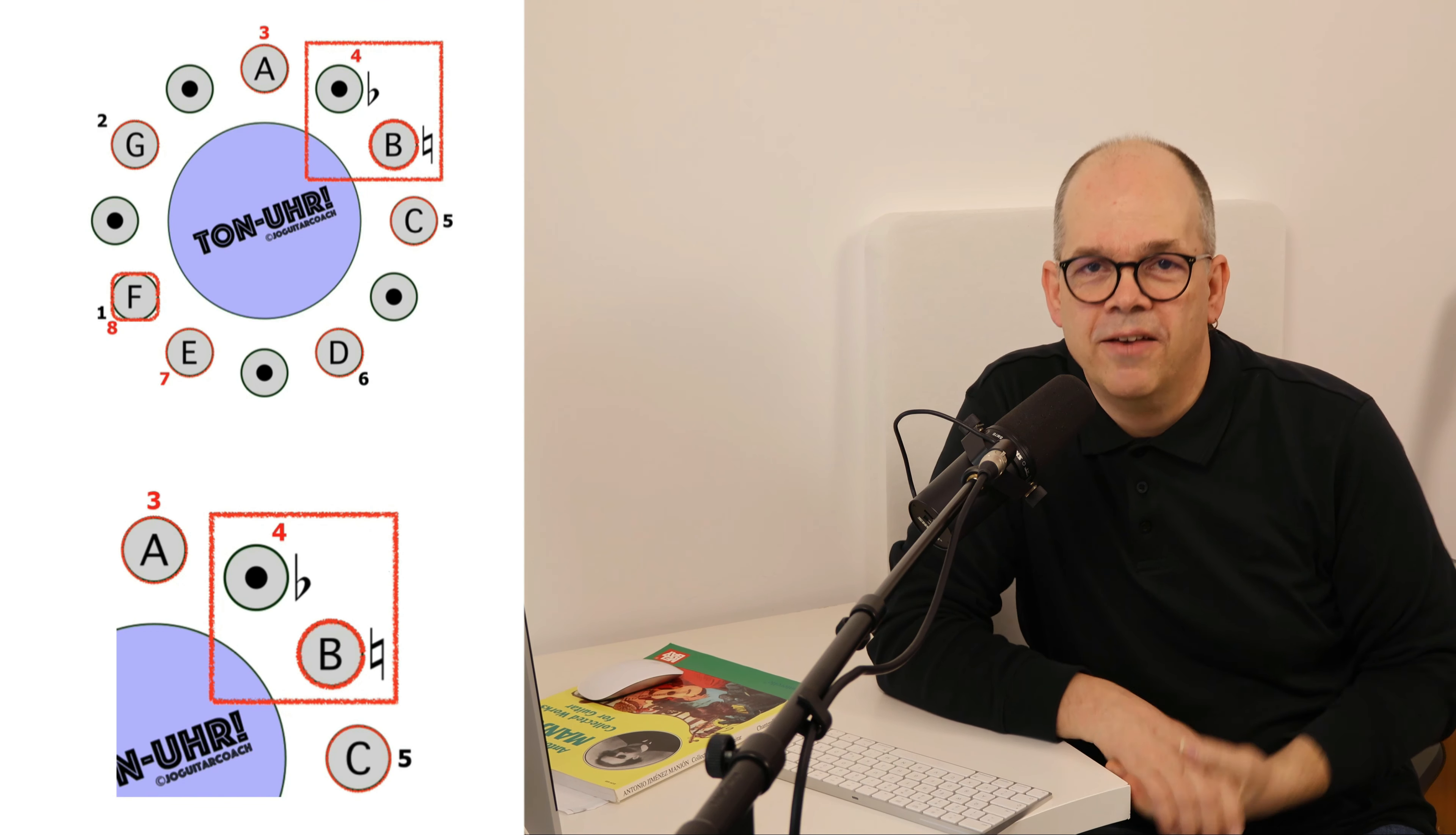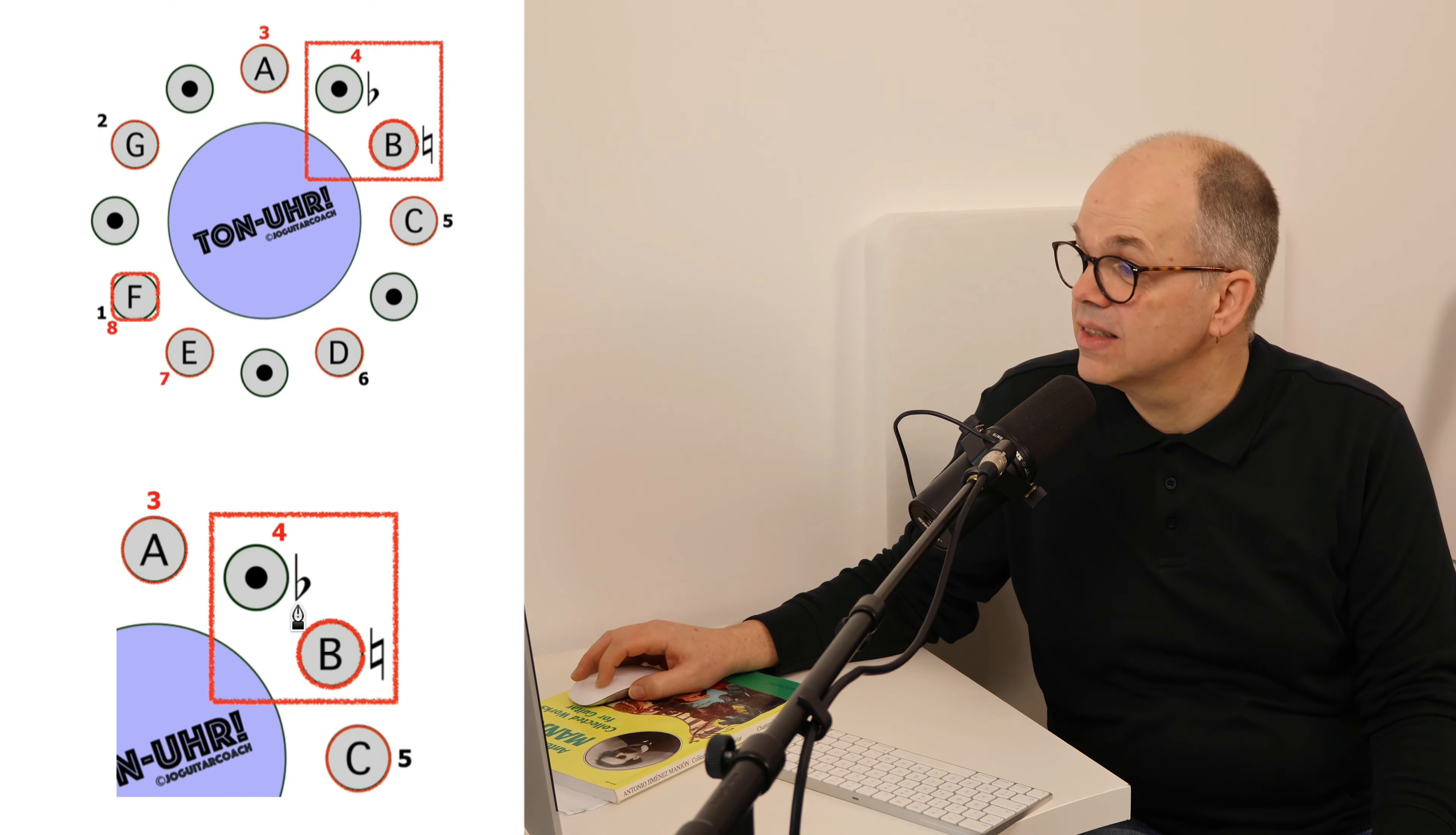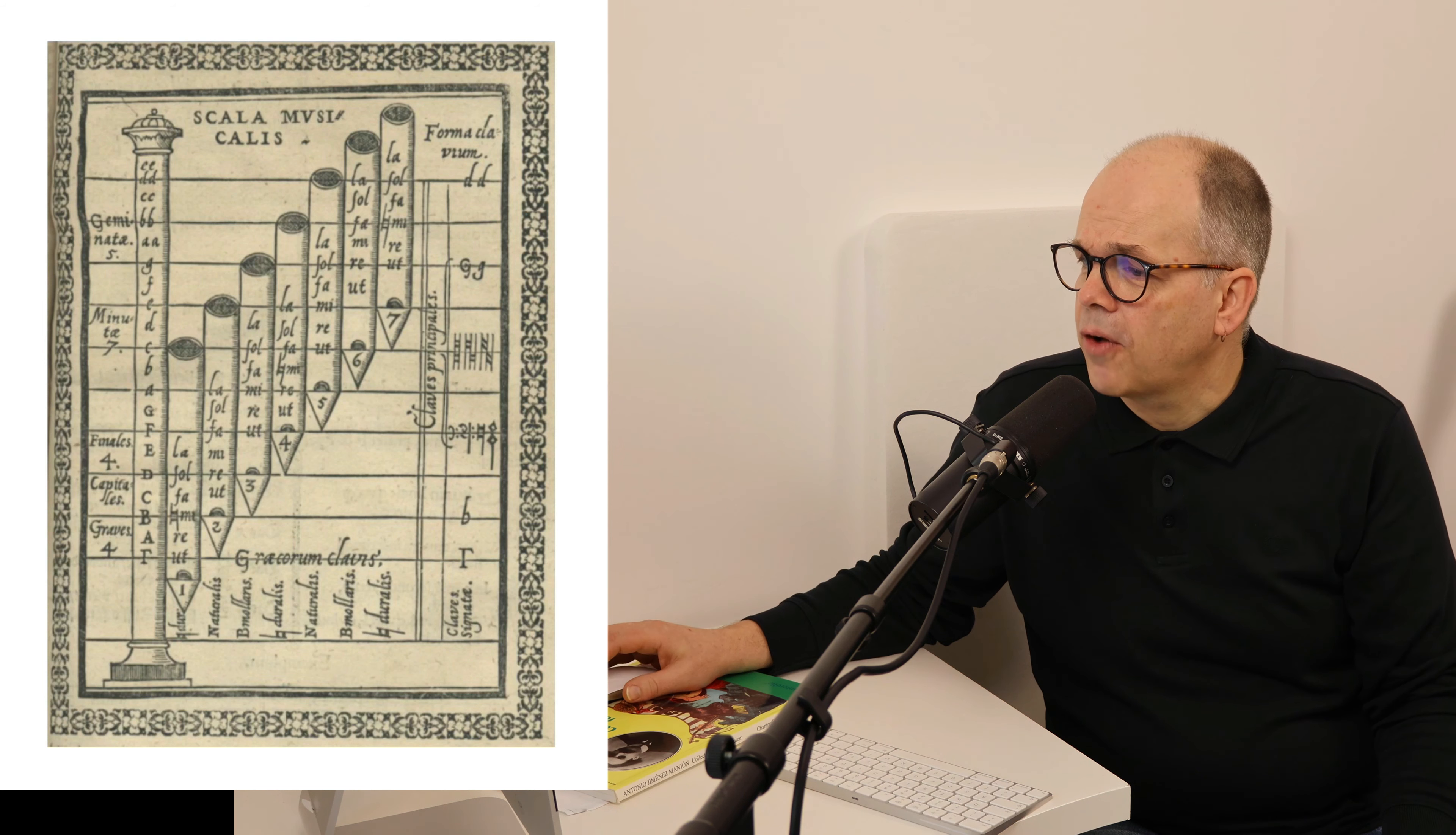When you observe carefully my tone clock what you see is that I put in where the B is the natural sign and where the B flat is the flat sign. They are all in use for a lot of time and I will show you this in a book by Adam Gumpelsheimer,